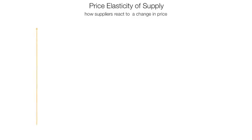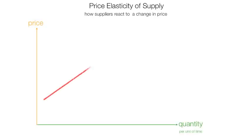Along the vertical axis is price. Along the horizontal axis, quantity per unit of time is plotted. And we have the standard supply curve. At each point on the supply curve, there is a price and associated quantity.